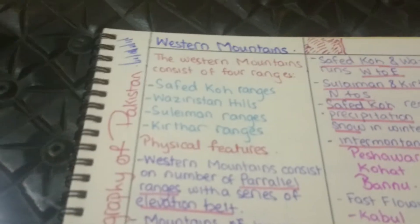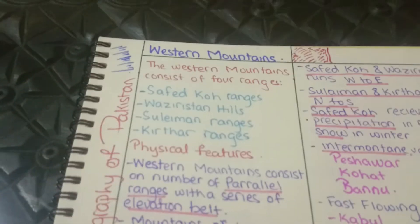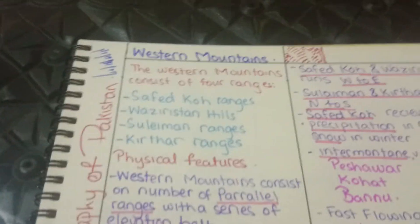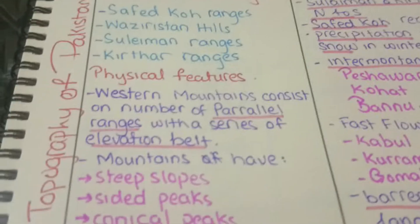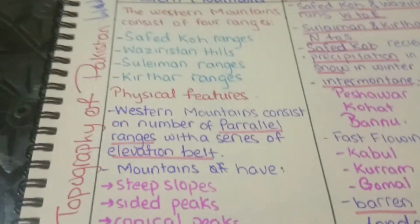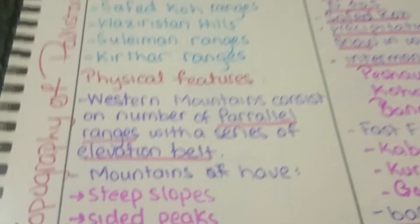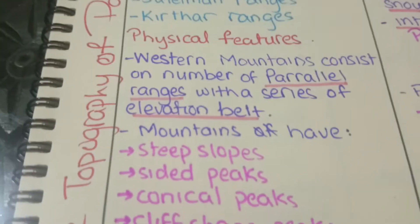The Western Mountains consist of four ranges: Safayd Kaur, Waziristan Hills, Suleiman Ranges, and Kirtar Ranges.